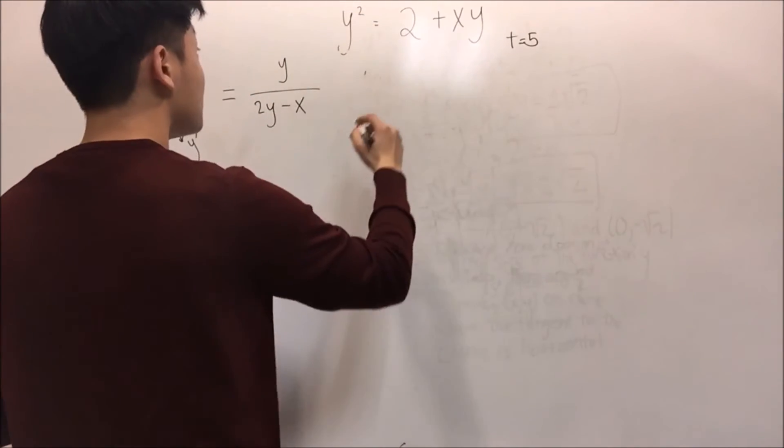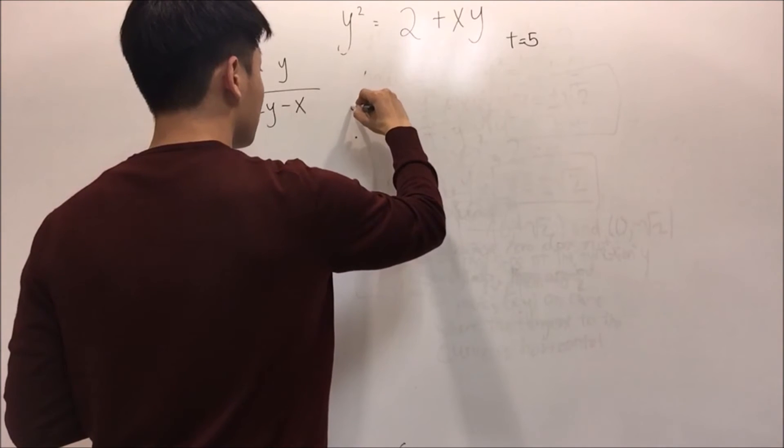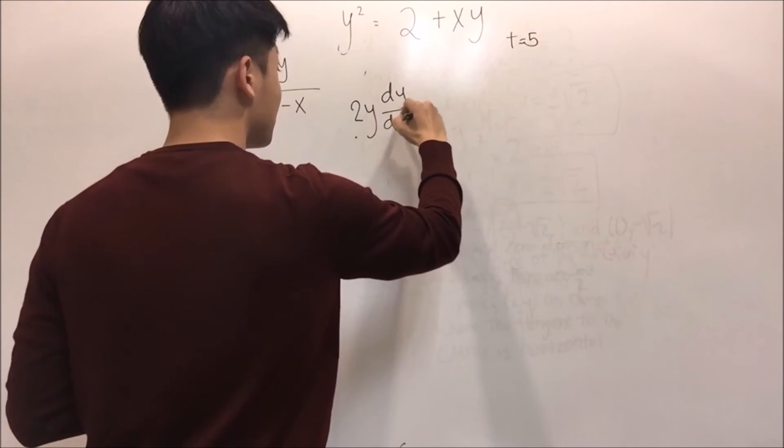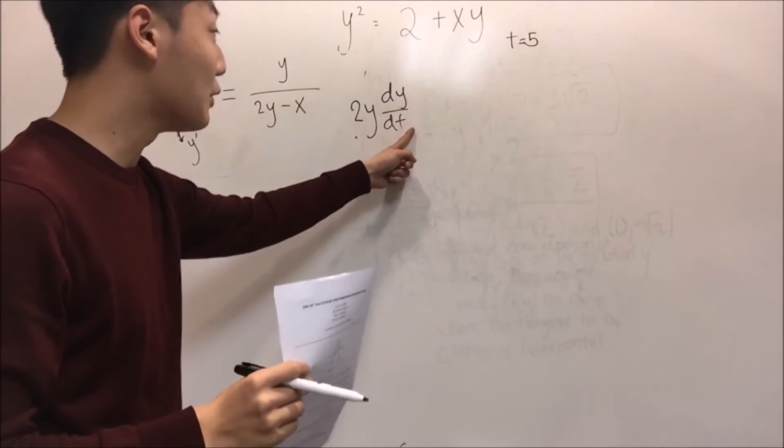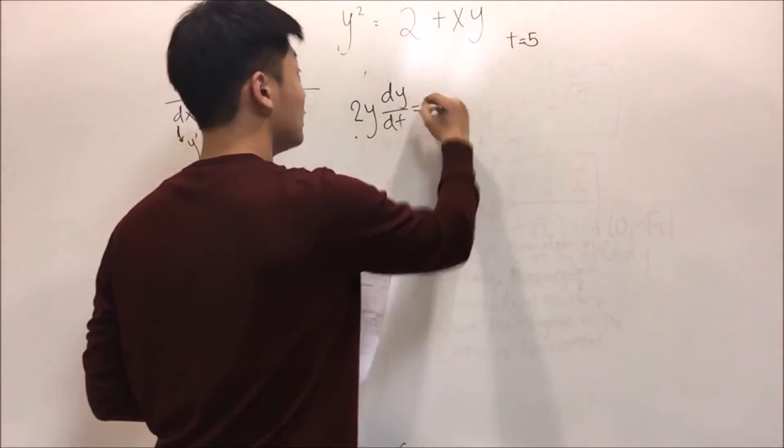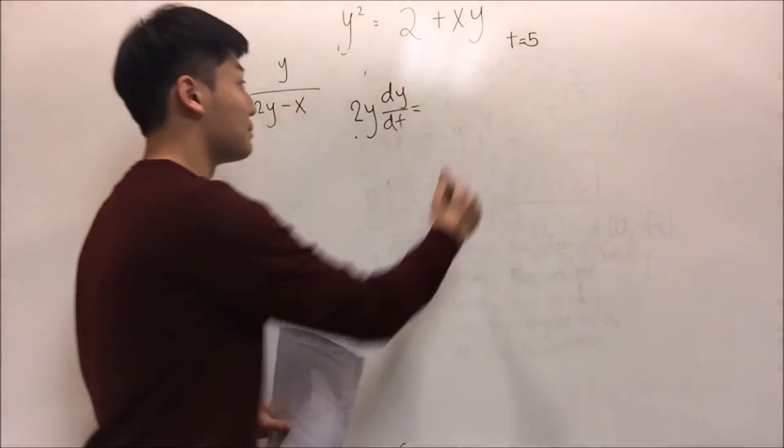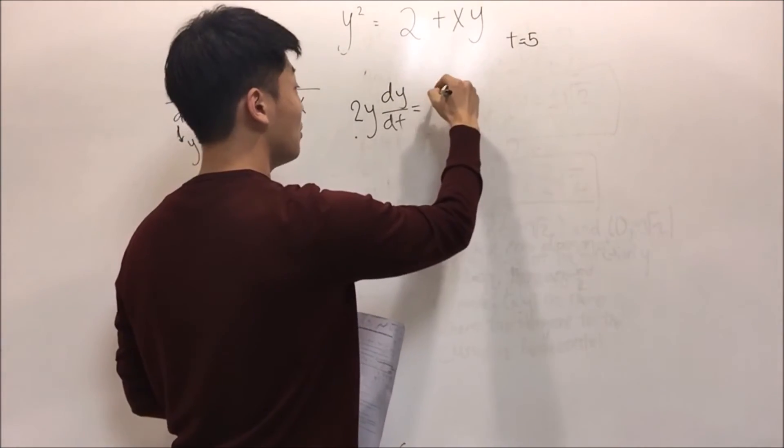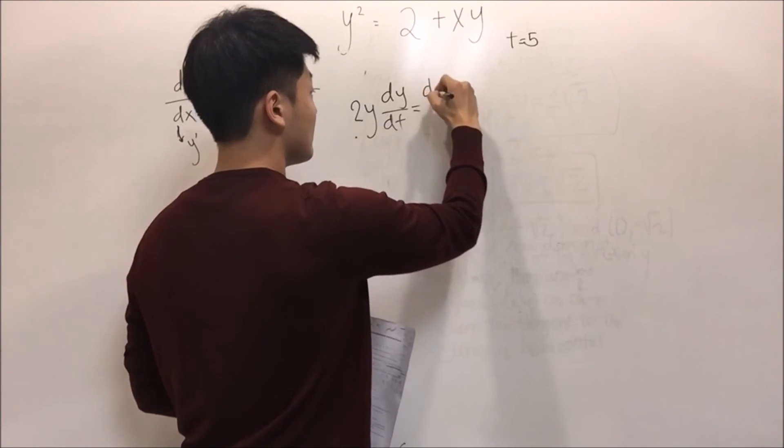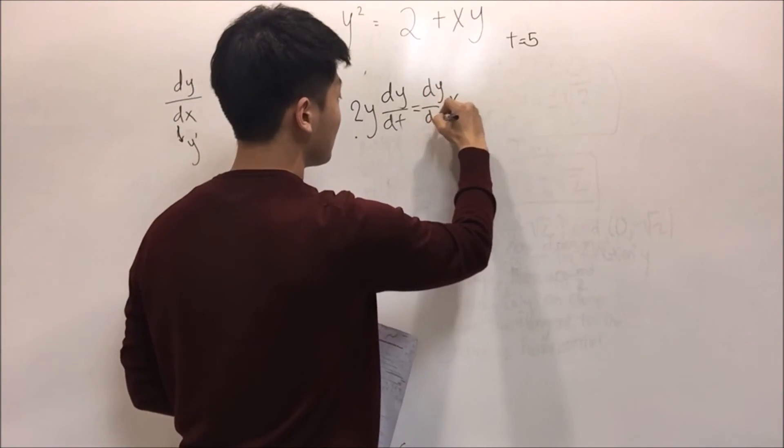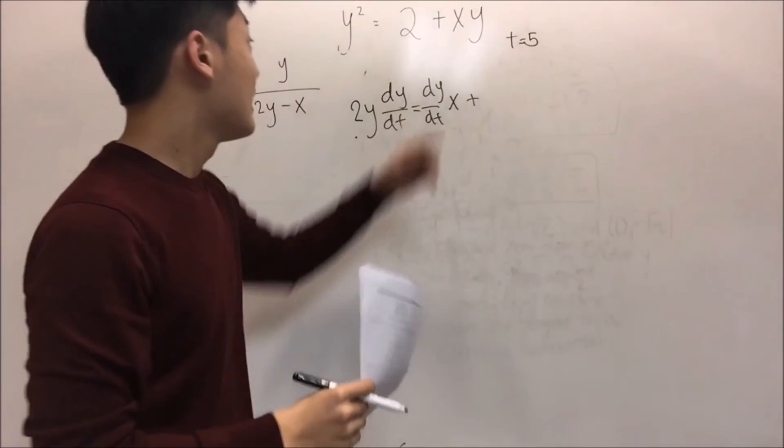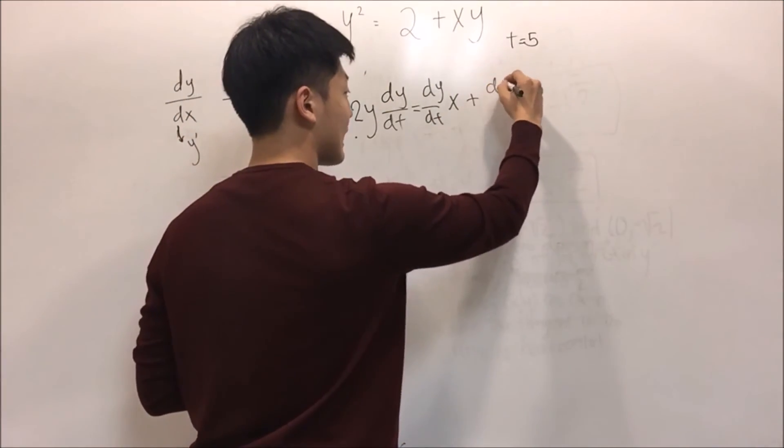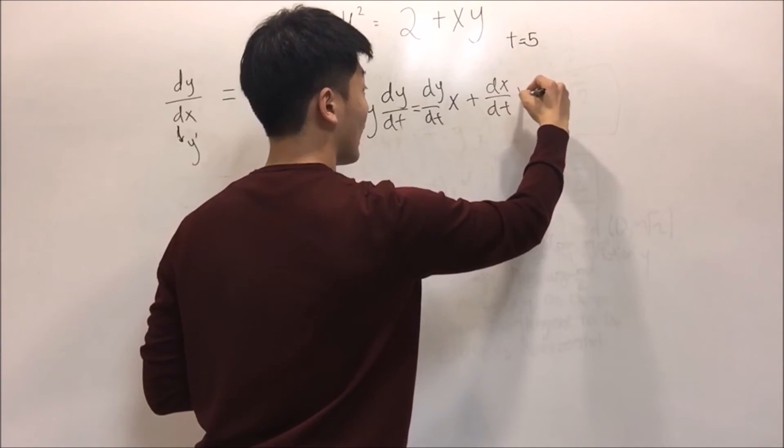At this time, because we are differentiating by t, we cannot write y prime. However, we should write dy/dt and dx/dt because there are three different variables by t. Let me differentiate this. It will become 2y dy/dt equals 0, and now first stays the same, second changes. So x dy/dt plus, now y stays the same but x changes, so dx/dt times y.